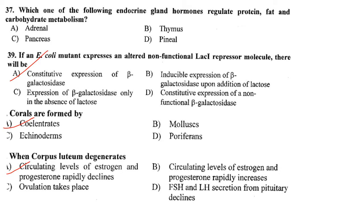Which endocrine gland hormone regulates protein, fat, and carbohydrate metabolism? Thyroxine is the hormone that regulates carbohydrate, protein, and fat metabolism in the body, secreted by the thyroid gland. However, the correct answer is not given in the options — it may be a printing mistake.